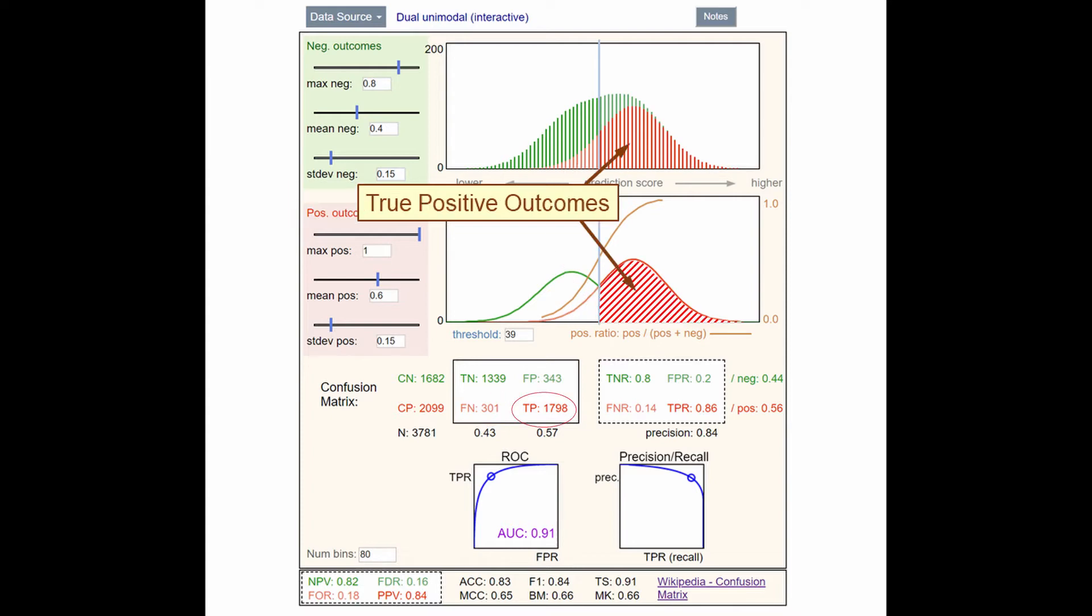True positives are red, or positive outcomes, to the right of the decision threshold. False positives are green, or negative outcomes, that were predicted positive because they fall on the right side of the decision threshold.